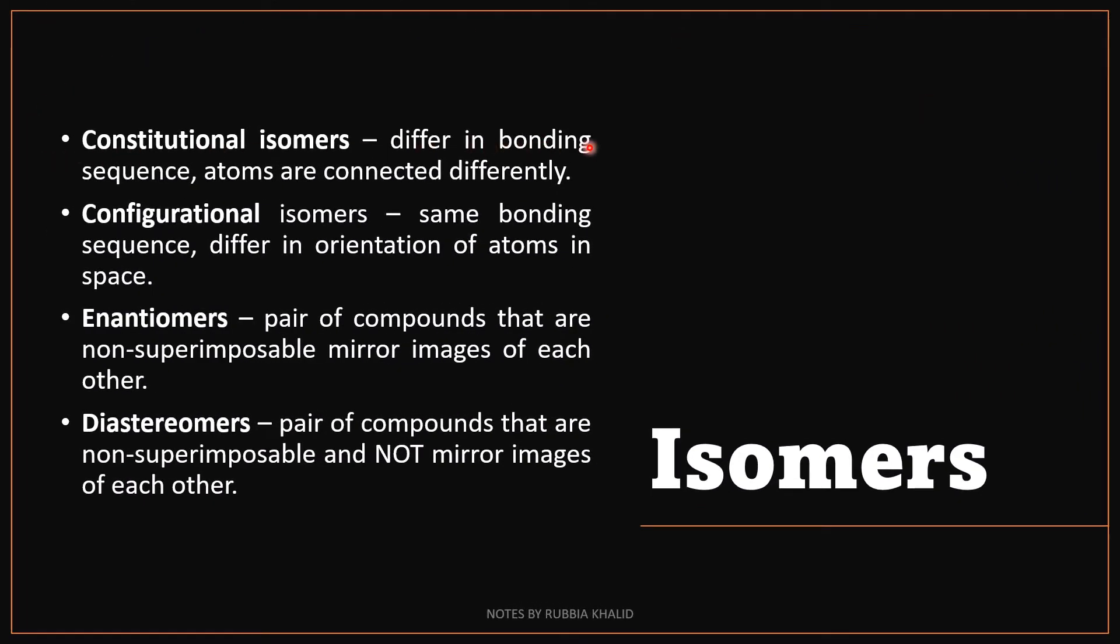Constitutional isomers differ in bonding sequence and atoms are connected differently. Configurational isomers have same bonding sequence but they differ in orientation of atoms in space. Enantiomers are pairs of compounds that are non-superimposable mirror images of each other. And diastereomers are pairs of compounds that are non-superimposable and not mirror images of each other.